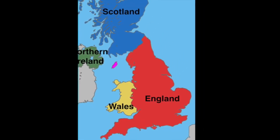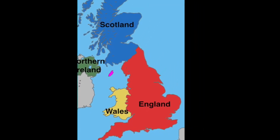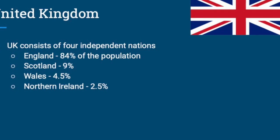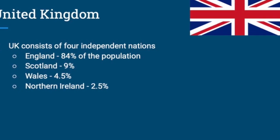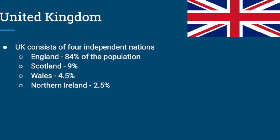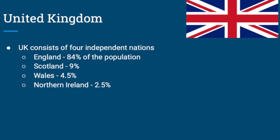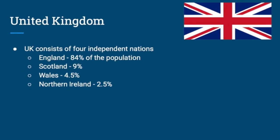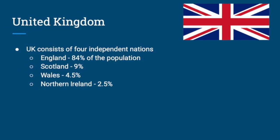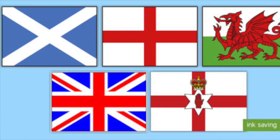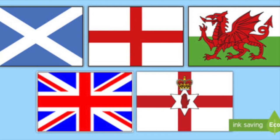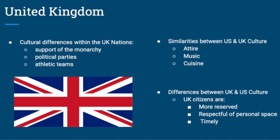Made up of four independent nations — England, Scotland, Wales, and Northern Ireland — 84% of the population resides in England, 9% in Scotland, 4.5% in Wales, and 2.5% in Northern Ireland. Many common institutions exist between the nations, but differences exist in support of the monarchy, political parties, athletic teams, and specific cultural differences.